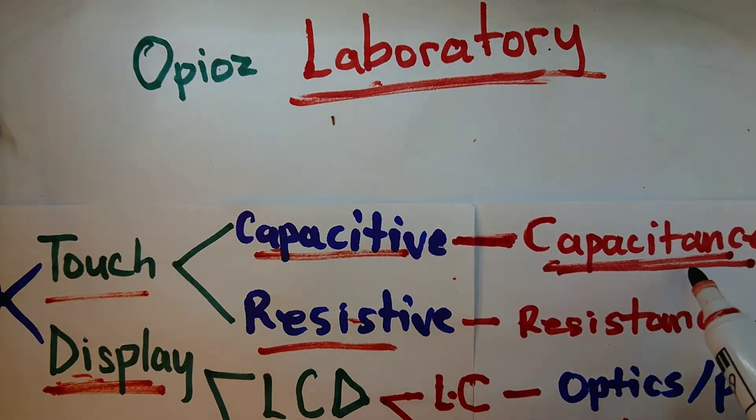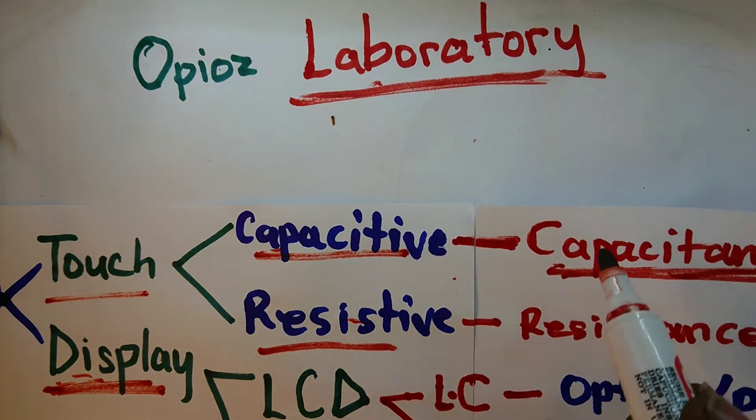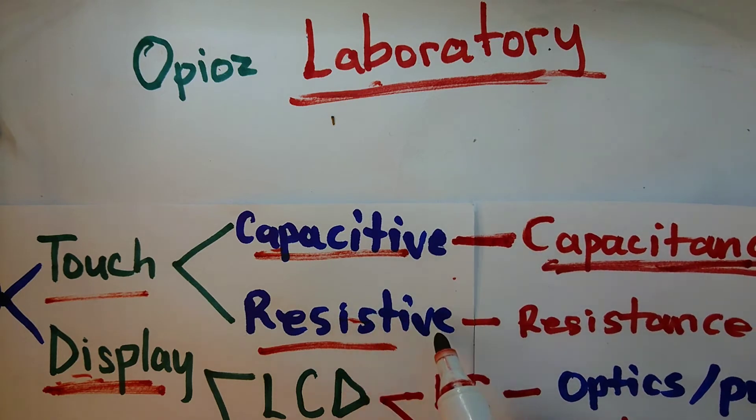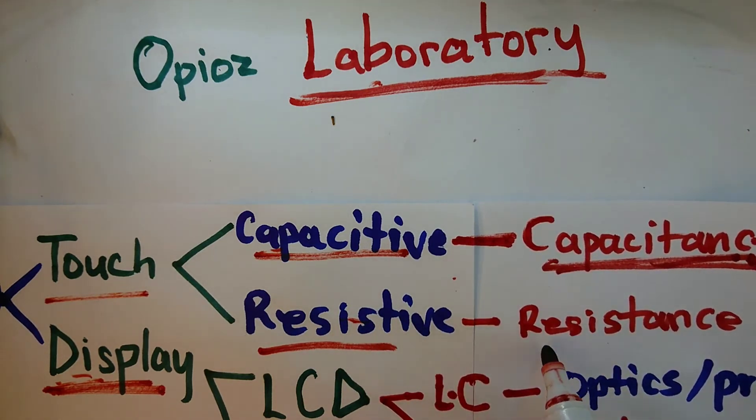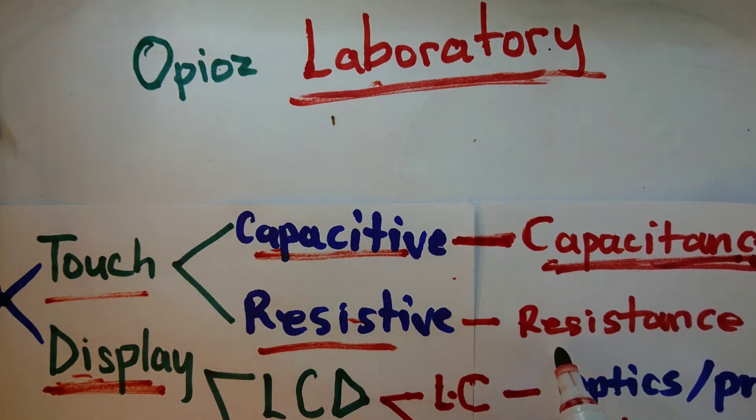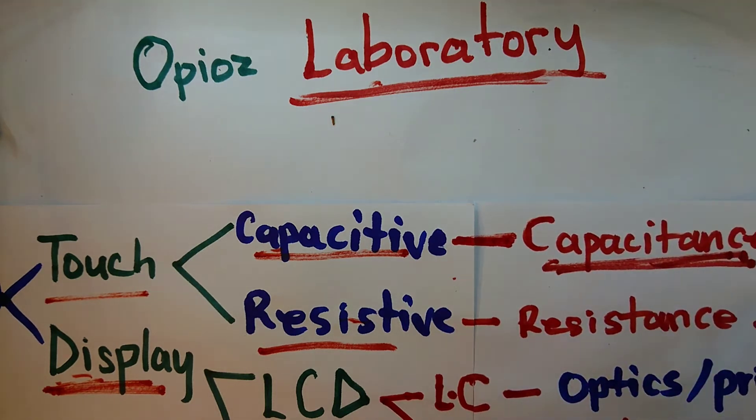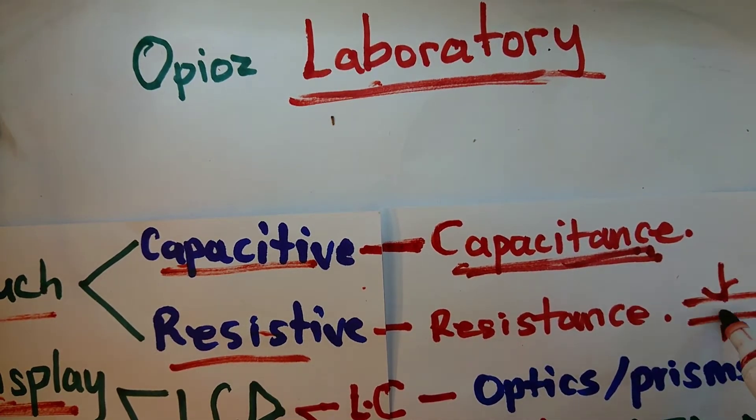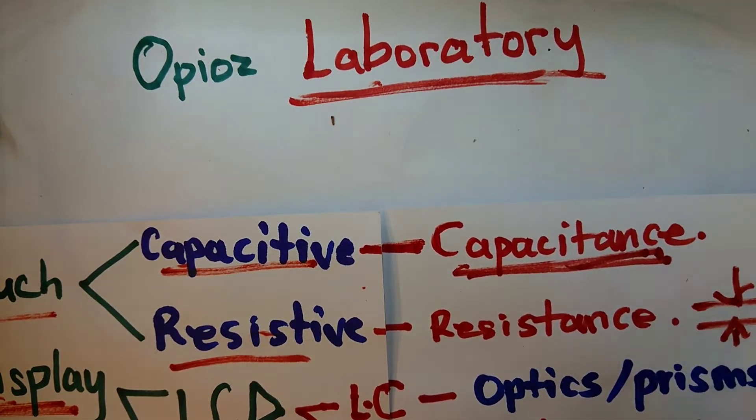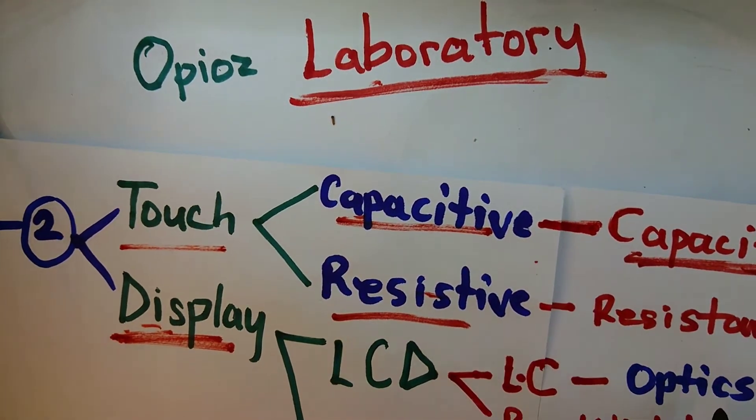So at some point in the tutorial series or the physics behind repair, you'll have to learn capacitance. And then the resistive touch screen simply use resistance because the top layer has resistive lines and the lower layer has resistive lines. When you press the top layer, it makes contact with the bottom layer and current flows. And that's how it is able to detect.